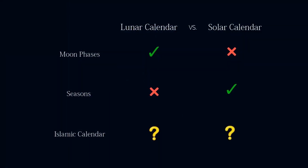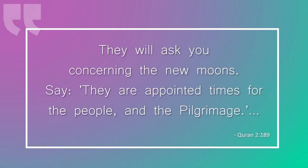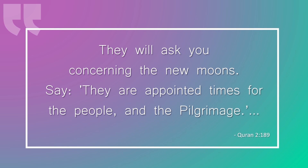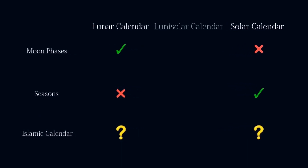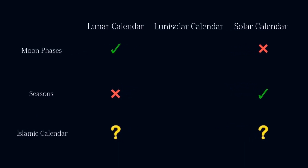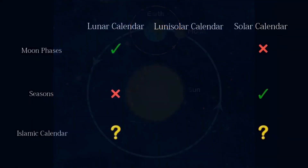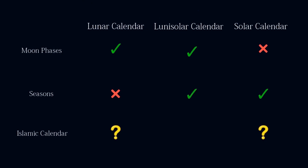Could it be solar? Well, probably not, because the Quran tells Muslims to rely on the phases of the moon to organize their calendar: 'They will ask you concerning the new moons. Say: they are appointed times for the people and the pilgrimage.' But if it's neither a solar calendar nor a lunar calendar, then what is it? Well, there is a third alternative — the lunisolar calendar. This type of calendar has the advantages of both the lunar and the solar calendars. It follows the moon phases while keeping months and seasons in sync. Moreover, it relies on both the sun and the moon, just as is suggested in the Quran.